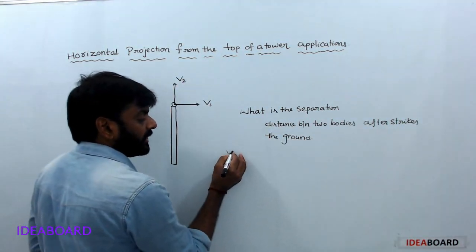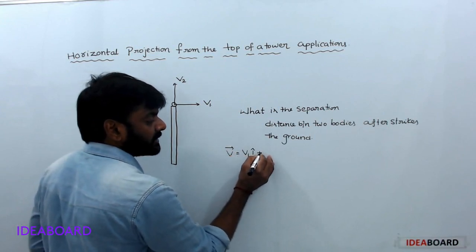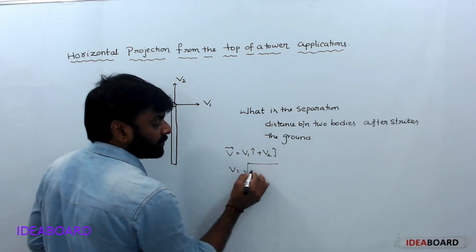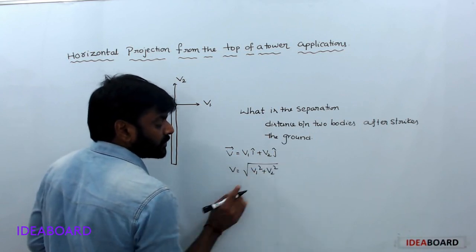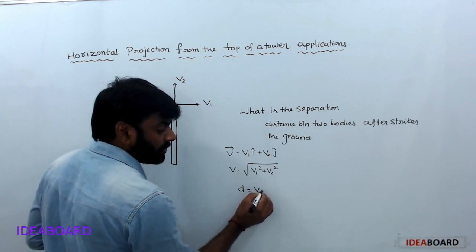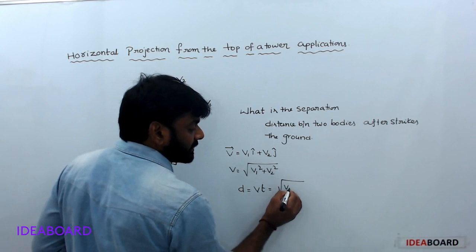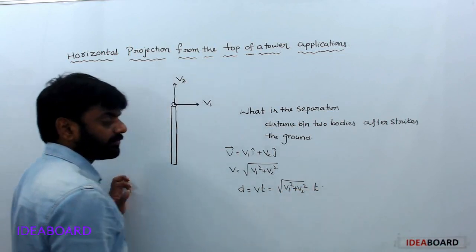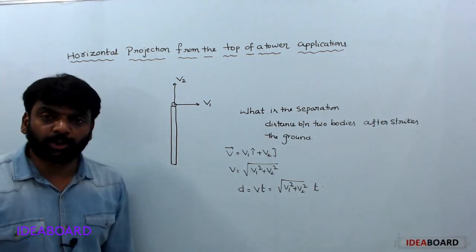The net velocity V-bar equals V1 î + V2 ĵ, with magnitude √(V1² + V2²). The separation distance is simply V into T, which equals √(V1² + V2²) · T.